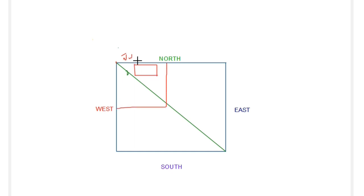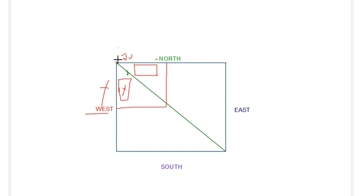So we choose the top. This is the diagonal line. If you look at this, we will choose the left direction. We choose the top. We choose the left direction. This is the North direction. If you choose the right portion of the left, if you choose the right portion of the diagonal line, you choose the left portion.